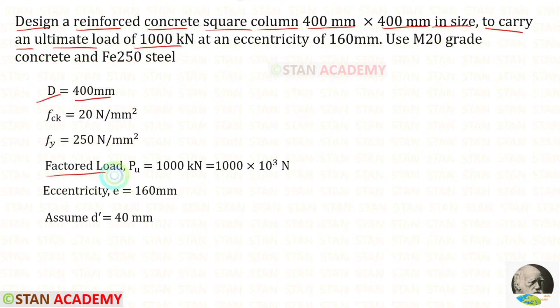The factored load PU is given as 1000 kilonewton. We can convert that into newton at an eccentricity of 160 millimeter. Use M20 grade concrete and Fe250 steel. FCK is 20 and Fe is 250.